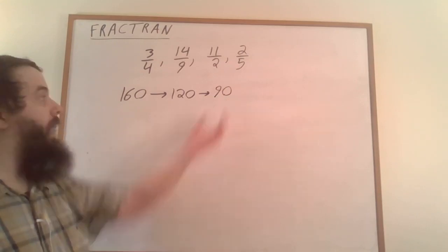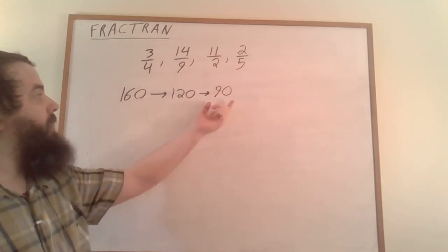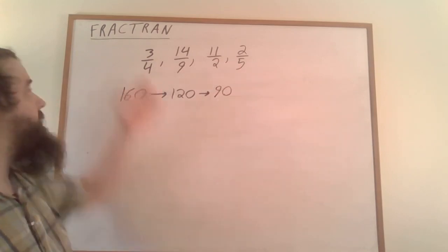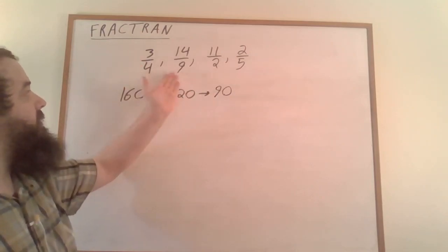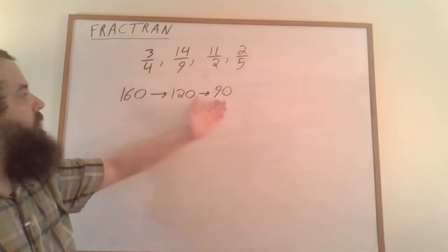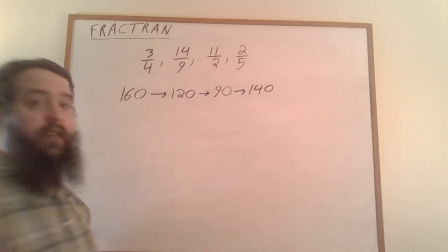We apply this again. We take 90 and look for the first fraction we can multiply it by. 90 isn't divisible by 4, but it is divisible by 9, so we multiply 90 by 14/9 to get 140.